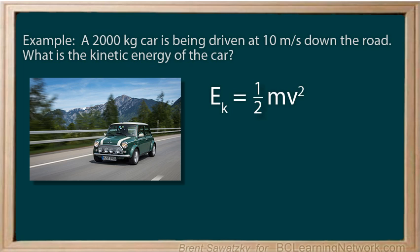So, in this case, EK equals one-half mv squared. Next step, we rewrite the equation with brackets in place of the variables m and v. Then, we can plug in our numbers. The mass is 2000 kilograms, and the velocity is 10 meters per second, and then we calculate.